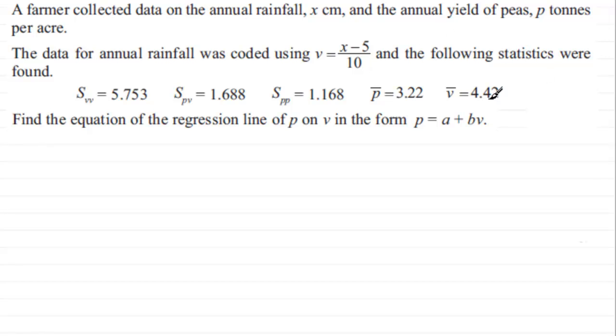We got the following statistics: Svv, Spv, Spp, and then we've got the mean of the data p and we've got the mean of the data for v. What we've got to do is find the equation of the regression line of p on v in the form p equals a plus bv.